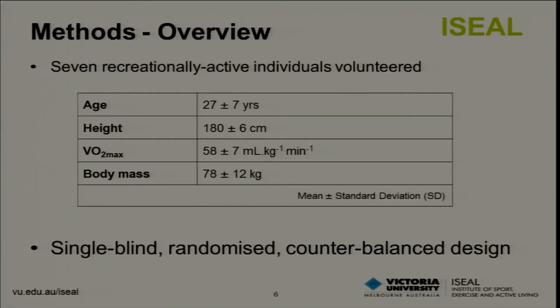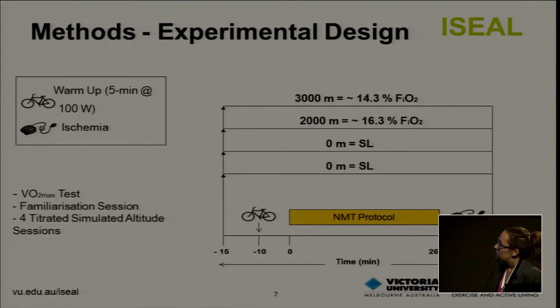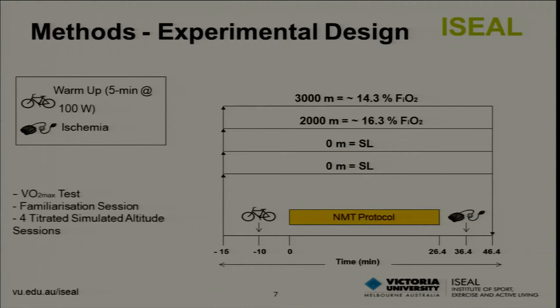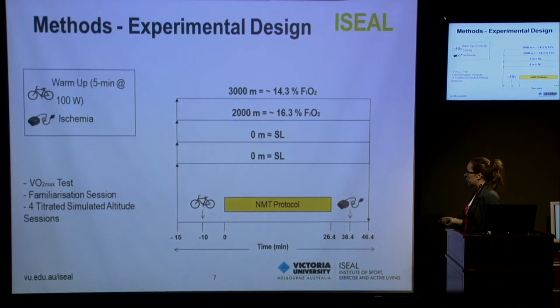Participants first completed a VO2 max test. They then came into the lab and completed a familiarisation session which involved four maximal four-second sprints on the non-motorised treadmill followed by a condensed version of the repeated sprint protocol. They then completed four sessions conducted at titrated simulated altitudes — sea level twice to obtain double baseline measures, then at 2,000 metres and 3,000 metres. Participants completed a five-minute warm-up on a bike at 100 watts, then went through the non-motorised treadmill protocol, followed by an ischemia for the NIRS measures.